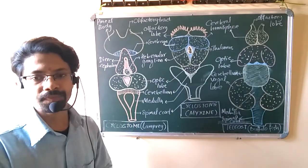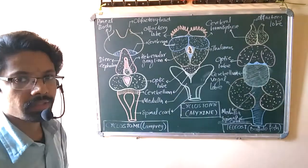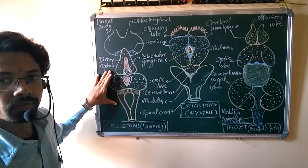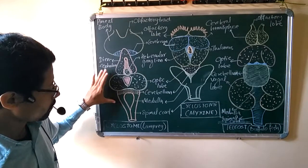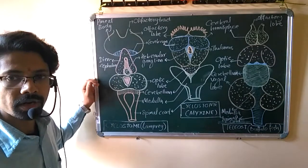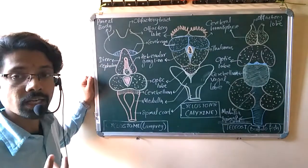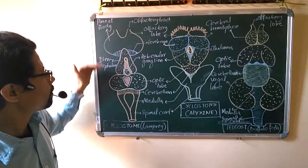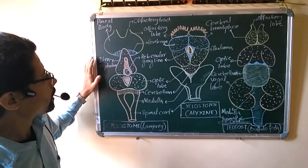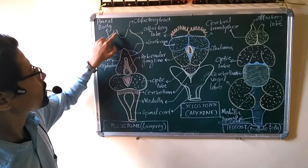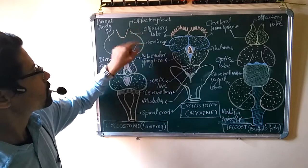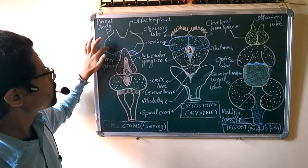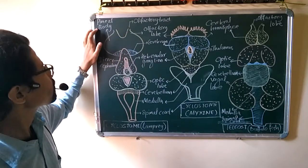The first diagram on the board is of a primitive fish — not a true fish but a primitive chordate. These are protochordates, cyclostomata, jawless animals, and they have a primitive brain. In the brain, the first part you can see is conical structures which are olfactory tracts, and these small lobes are the olfactory lobes.